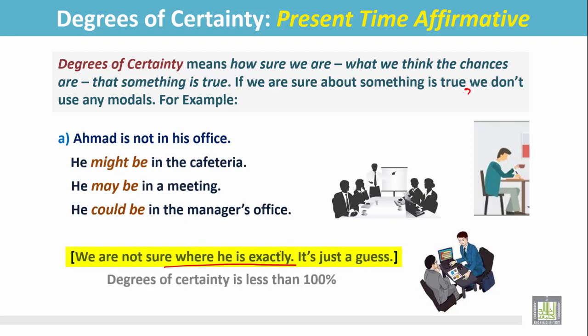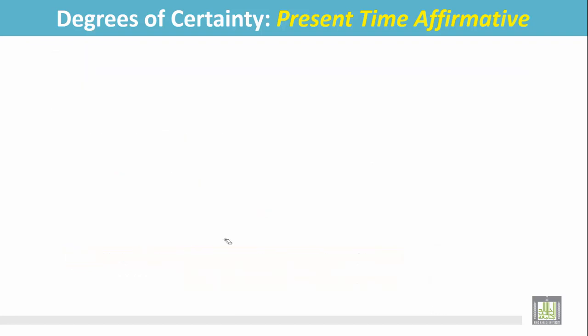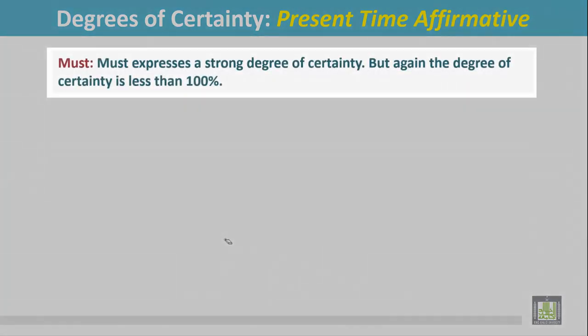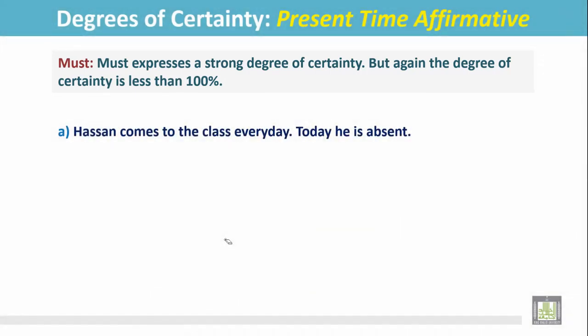The degrees of certainty is less than 100%. Must: Must expresses a strong degree of certainty, but again, the degree of certainty is less than 100%. See the example: Hassan comes to the class every day.